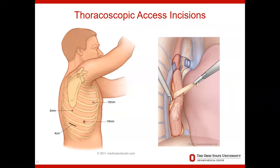The thoracoscopic access incisions for the thoracoscopic portion of the operation are very small — 10 millimeters to 5 millimeters — with a 4 centimeter access incision to allow specimen removal. During the thoracoscopic portion, the esophagus is detached from all connections within the thoracic cavity for full mobility. The tumor is located and the esophagus is divided with at least a 5 to 6 centimeter margin to lower the chances of local recurrence at the reconstruction site.